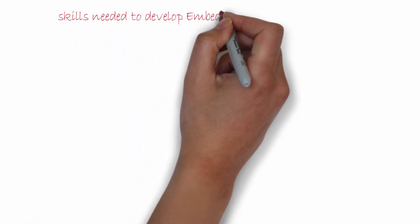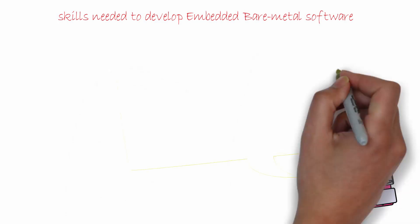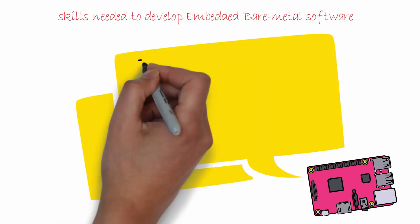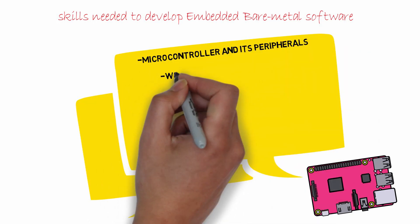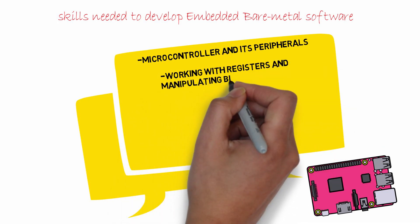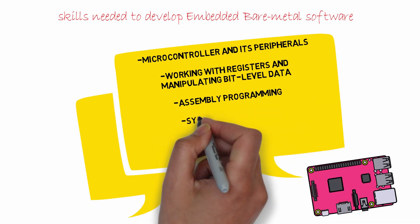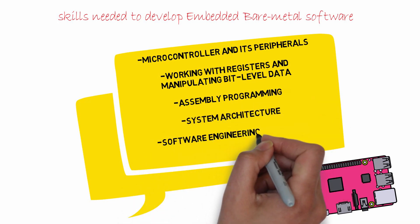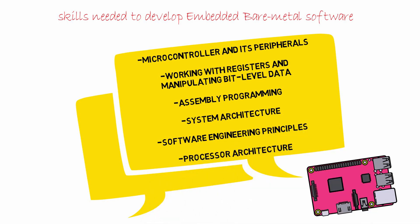What are the skills needed to develop embedded bare metal software? Developing it requires a good understanding of microcontrollers and their peripherals, the ability to read datasheets, working with registers, and manipulating bit-level data. Other required skills include assembly programming — used rarely, but an understanding of how it works is very important — system architecture, software engineering principles such as modularity and data abstraction, and processor architecture.